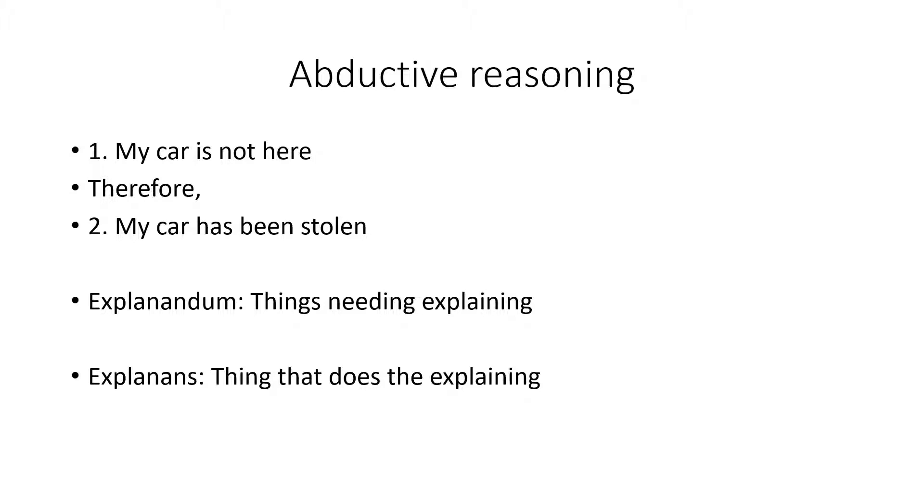In a bit of philosophical jargon you don't really need to know this, but it's worth knowing if you do start to read some arguments that involve abductive reasoning. When we have the thing that needs explaining, which is that my car is not here, that's called the explanandum. The explanation or the conclusion that my car has been stolen is the explanans, the thing that does the explaining.